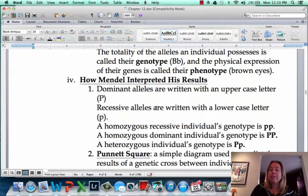Dominant alleles are going to be written with an uppercase letter. Recessive is going to be lowercase. Then you've got three different ways that things could play out. You could have homozygous recessive, which would be little p, little p. You could have homozygous dominant, which is big P, big P. Or you could have heterozygous, which is big P, little p. So those are all the possible combinations you can have.